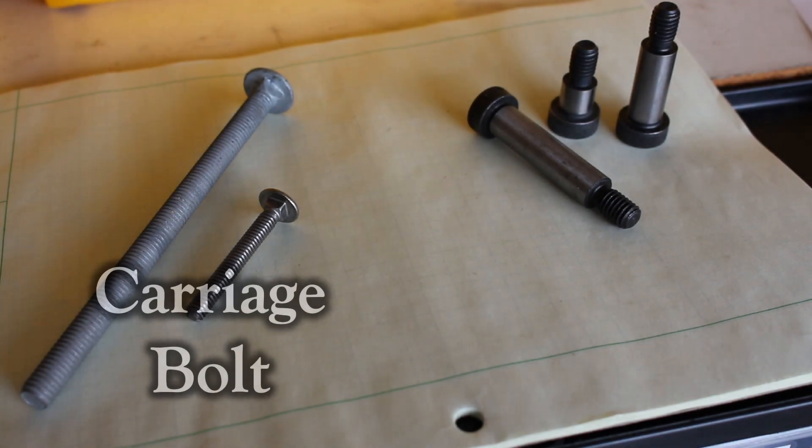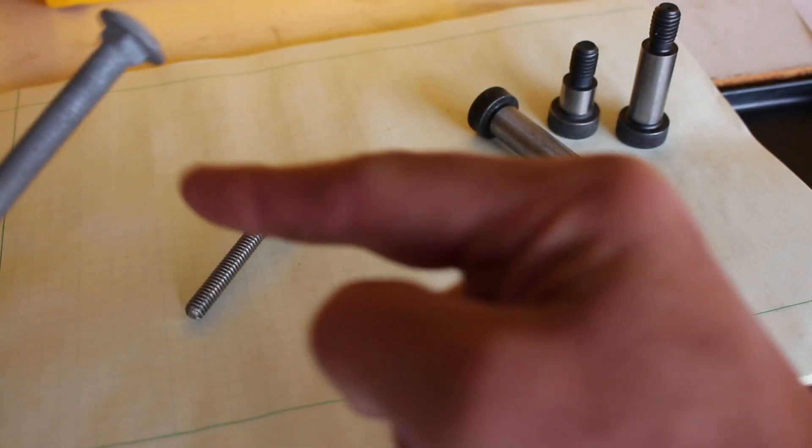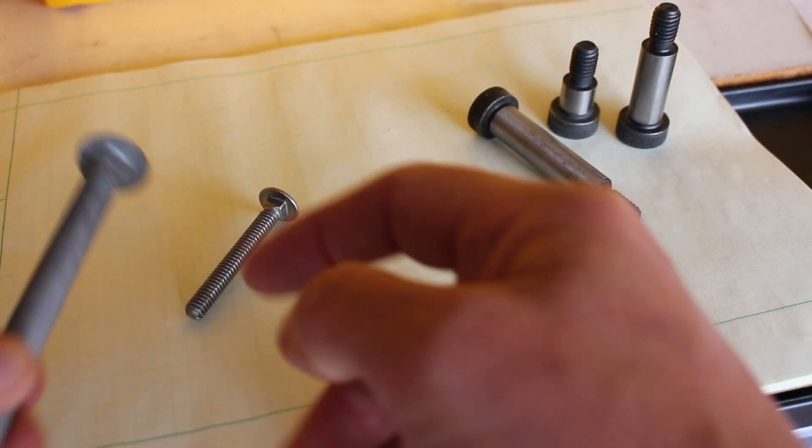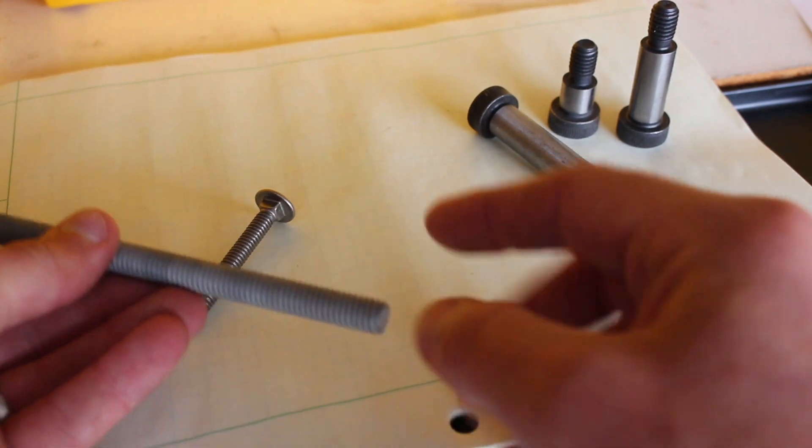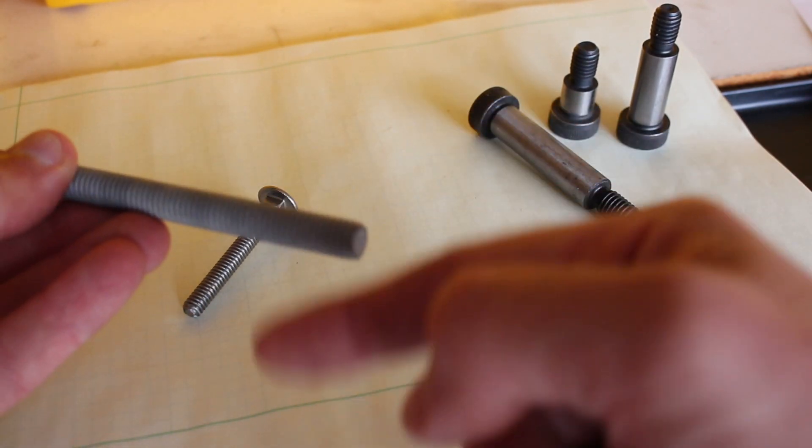The first one I want to talk about is the carriage bolt. The carriage bolt has no way to torque the head. Instead, it has a square extrusion that bites into the material. The utility of this is that once it's in place, you only need to access the threaded end, one side of the bolt, to tighten it down.